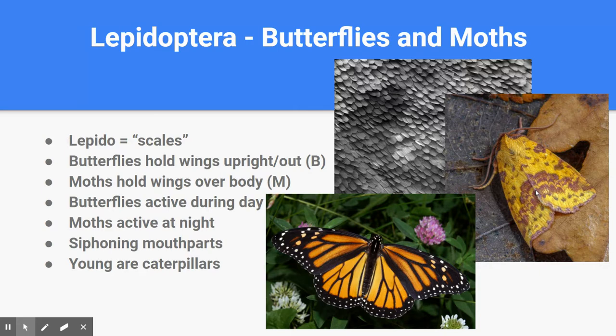Mouth parts in Lepidoptera are called siphoning — very much like a garden hose or a big bendy straw. They can unroll that mouthpiece to reach nectar in flowers. The young, of course, are caterpillars, so don't overlook that — caterpillars can be in your insect collection. It's probably one of the most interesting insect transformations, going from a caterpillar to a butterfly or a moth.